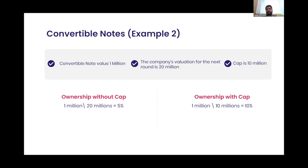SAFE notes and KISS notes are standardized convertible notes created by Y Combinator to standardize the terms in convertible notes. There is also the Uqaz convertible note, which is an Islamic convertible note approved by VCPEA in Saudi Arabia, and other convertible notes drafted by lawyers. The purpose here was explaining the two terminologies — discount and cap — and the two methods of conversion, which are found in KISS notes and SAFE notes as well.